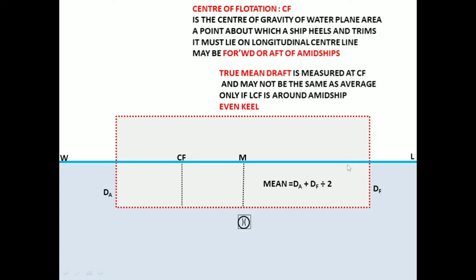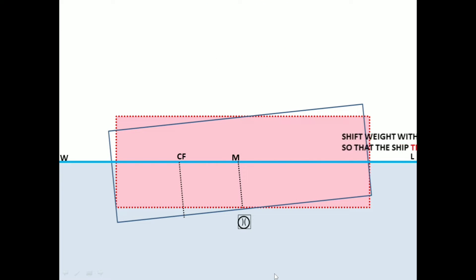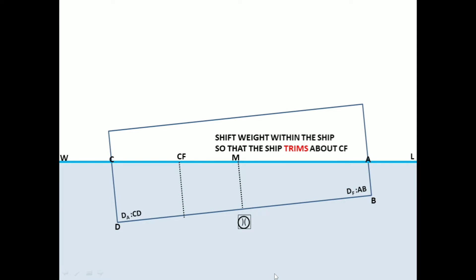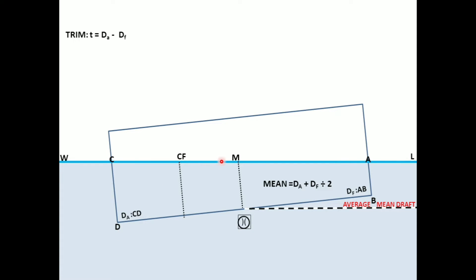Let me show you the case when forward and aft drafts are the same. You have midships, center of rotation, and the mean draft — so the mean draft equals the true mean draft, or hydrostatic draft. Now let me shift some weights so the ship trims. I have not added any weight, just shifting weights. The ship trims about the center of rotation. Now we have the ship with some trim, a forward draft and an after draft, and the difference between them is your trim. If I look at the draft at midships, that would be the average of forward and aft. But the true mean draft is taken at the center of rotation, so there is a correction to be applied.